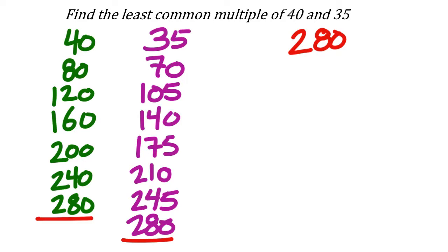This first method may seem a bit inefficient. Using the calculator makes it easier to find multiples. After we show prime factorization, you can choose whichever method you prefer. Just to clarify: it's not that 280 is the same *numbered* multiple for both — it's the seventh multiple of 40 but the eighth multiple of 35. We're simply looking for the same value that appears as a multiple of both.